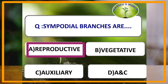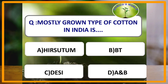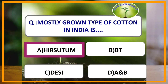Which one of the following is the mostly grown type of cotton in India? The answer is Gossypium hirsutum. Gossypium hirsutum, that is American cotton, which is tetraploid in nature, is the mostly grown type of cotton in India.